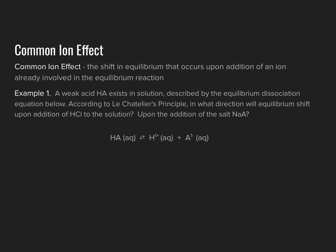The same effect occurs upon the addition of the salt NaA. Recall that all alkali metal salts are soluble, so NaA completely dissociates into sodium ions (Na⁺) and the A⁻ anion. Comparing this dissociation with the initial equilibrium for weak acid HA, the common ion between the two equations is the anion A⁻.